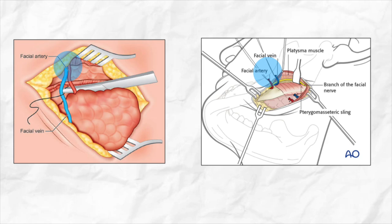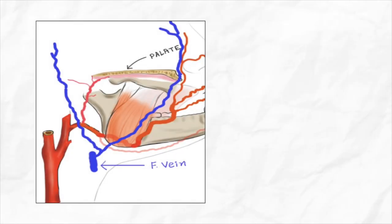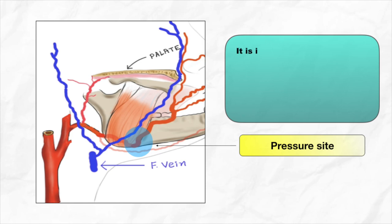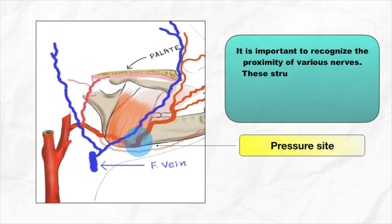If bleeding from the facial artery occurs, direct pressure should be applied to the angle of the mandible over the vessel until the vessel is identified and bleeding is controlled. It is also important to recognize the proximity of various nerves to the facial artery during surgical procedures; these structures need to be identified early and preserved to minimize post-operative complications.